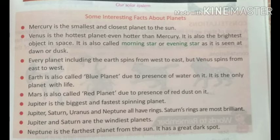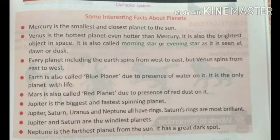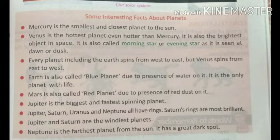Earth is also called the blue planet due to the presence of water on it। यह एकमात्र ऐसा ग्रह है जिस पर life है। Space से देखने पर हमारी Earth blue color की दिखाई देती है क्योंकि इस पर 71% पानी है। Mars — मंगल ग्रह — is also called the red planet due to the presence of red dust on it। इस पर लाल धूल पाई जाती है, इसलिए इसे red planet कहते हैं।